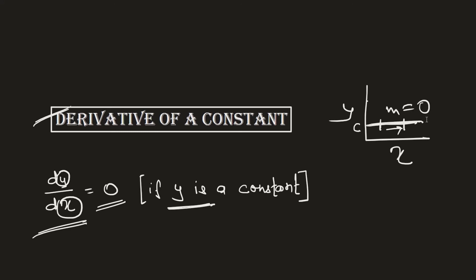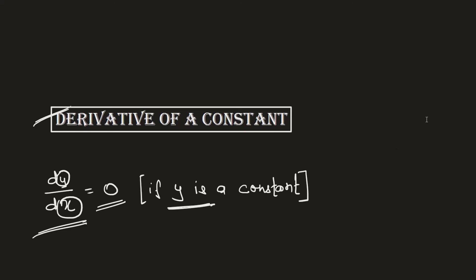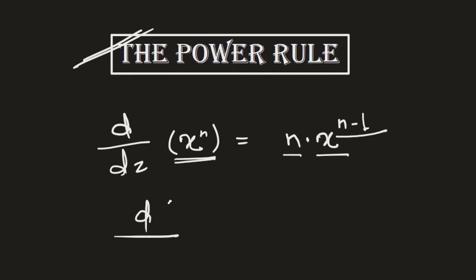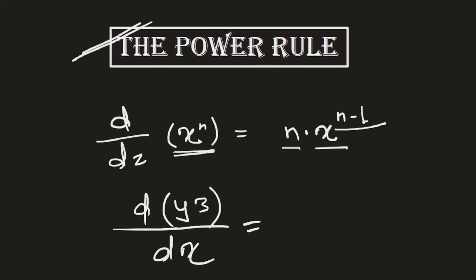But if y is varying over time, the slopes will have some nonzero value. This is why for any constant term, the derivative is always zero. The power rule says that to find the derivative of xⁿ, the value of n comes in front and is multiplied by x^(n-1). For example, the derivative of y³ with respect to x is 3y², using n=3 and subtracting 1 from the exponent.